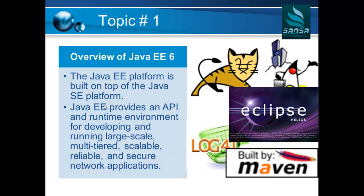The first topic in this training program is an overview of Java EE6 technologies. The Java EE platform is built on top of the Java SE platform, and it provides an API and runtime environment for developing and running large-scale, multi-tiered, scalable, reliable, and secure network applications. You'll be learning about Eclipse IDE, Tomcat server, and different tools including Log4j and Maven.